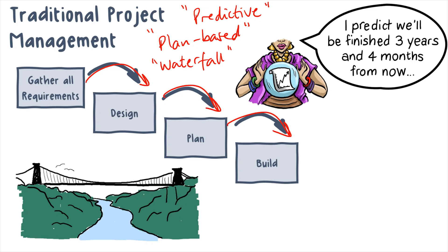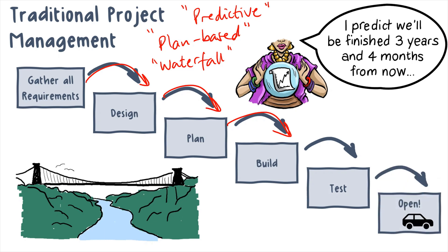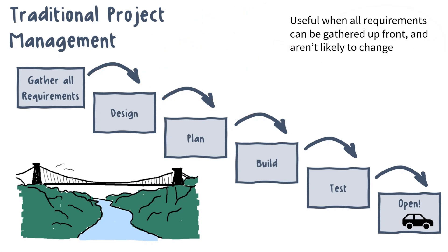We'll also need to test our bridge and make sure it passes highway regulations for safety, and then finally we can open the bridge to cars and lorries three or four years on from when we first started gathering requirements. This kind of traditional approach might be described as predictive, plan-based, or waterfall. When we describe a project as predictive, it's not because it's simple — this is a big, long, complicated project. It's predictive because it is possible to gather all of the requirements up front and plan in advance how the project is going to unroll, and we are confident those requirements are not going to change.